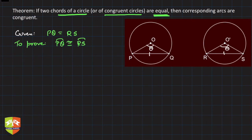There are three possibilities — either we are talking about PQ as the major arc or PQ as the minor arc, but in both cases you will see the result is the same. So let us consider these two triangles.